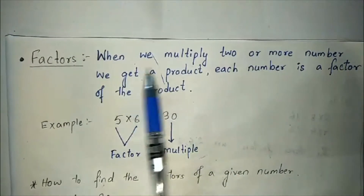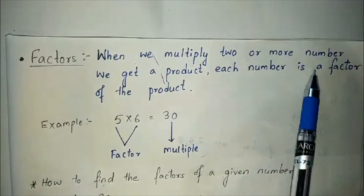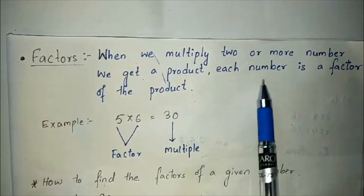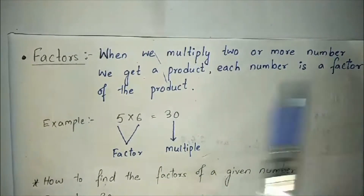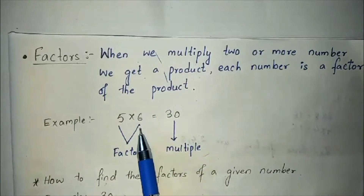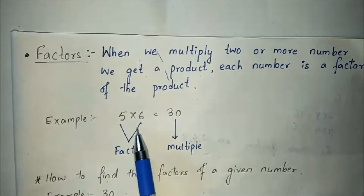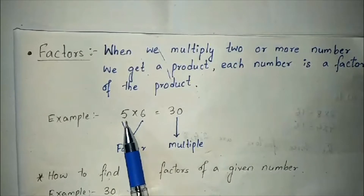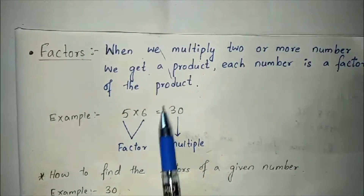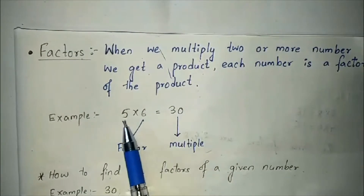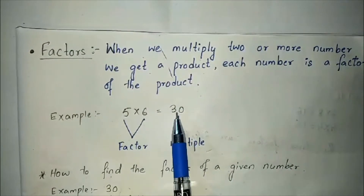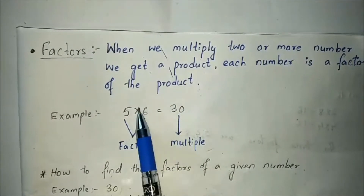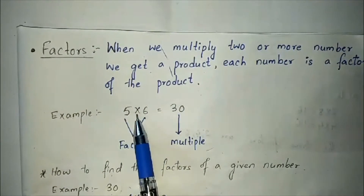Factors. When we multiply 2 or more numbers we get a product, and each number is a factor of the product. Let us take the example of 5 and 6. When we multiply 5 and 6 we get the product 30. So 5 and 6 are factors of 30, and 30 is a multiple of 5 and 6.